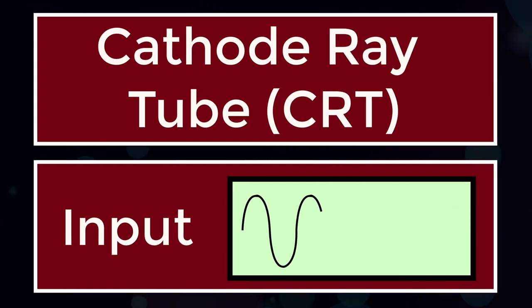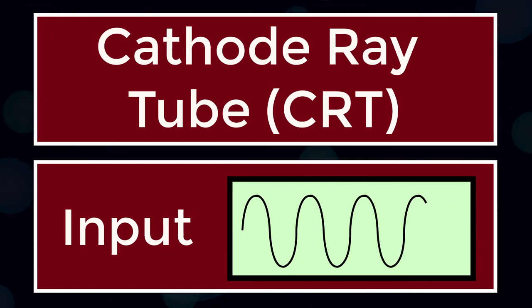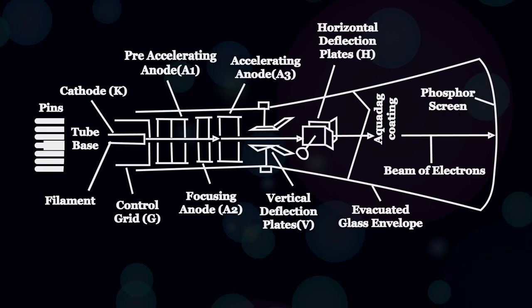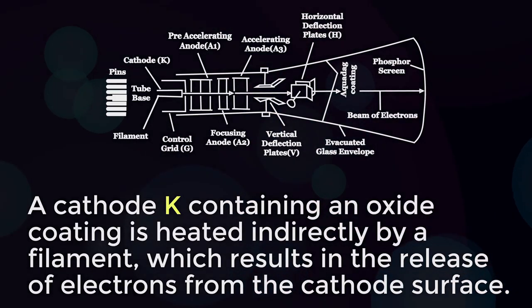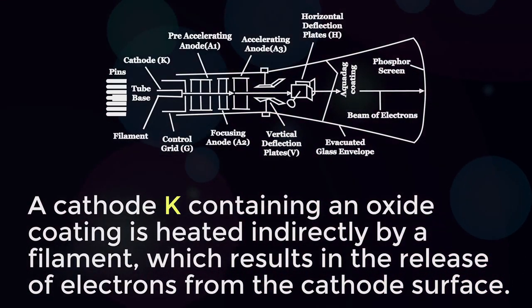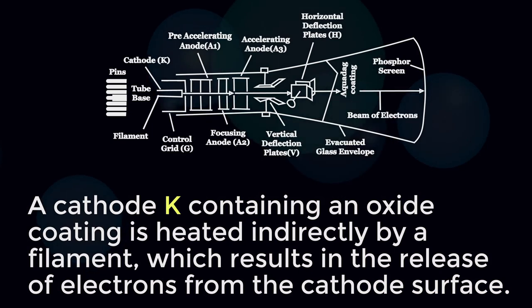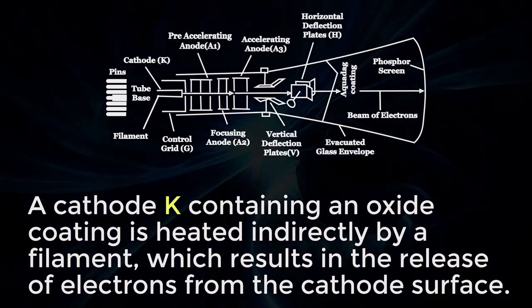CRT provides the visual display of the input signal waveform. A cathode K containing an oxide coating is heated indirectly by a filament, which results in the release of electrons from the cathode surface.